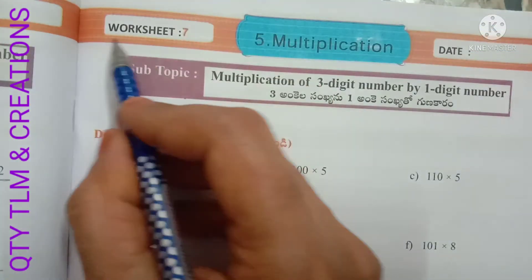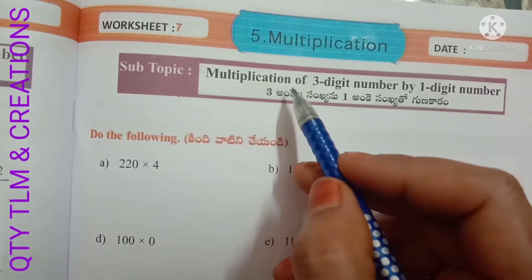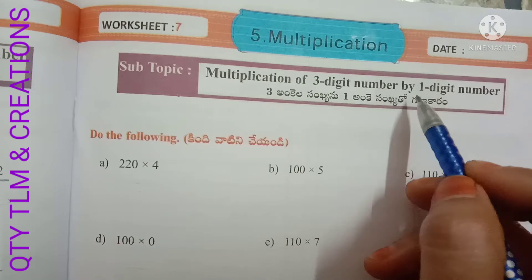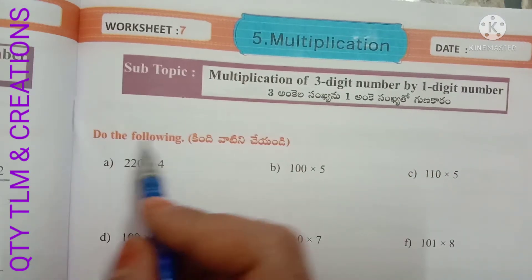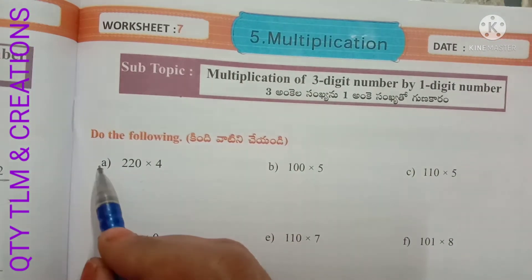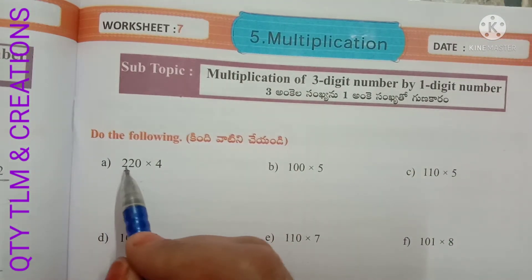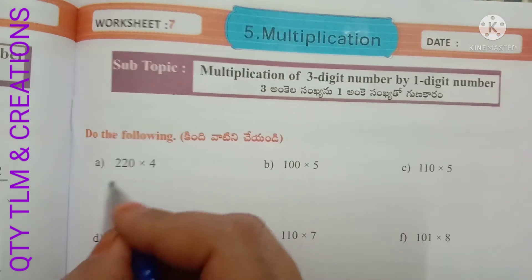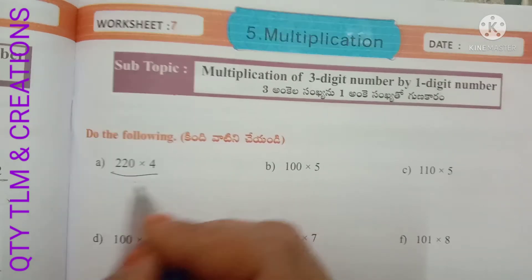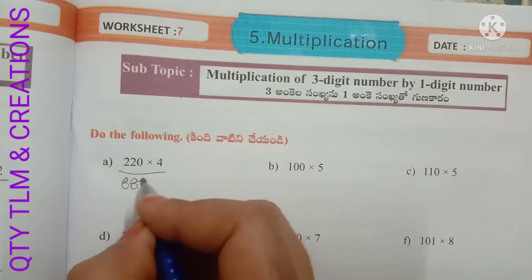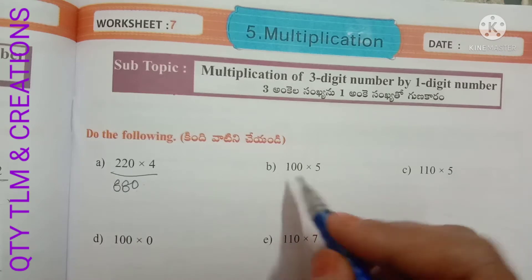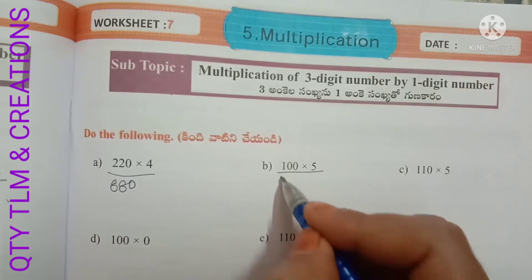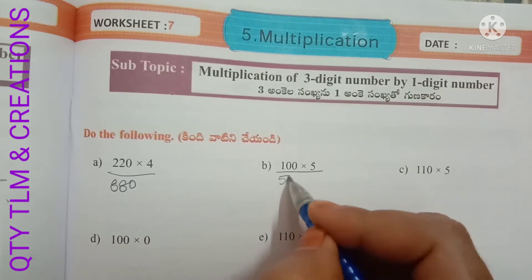Next, worksheet number 7, subtopic: multiplication of a 3-digit number by a 1-digit number. Do the following. A: 220 into 4, we will get 880. Next B: 100 into 5, we will get 500.